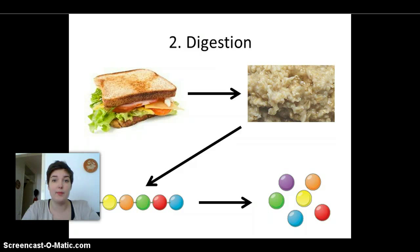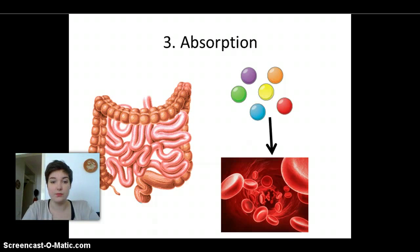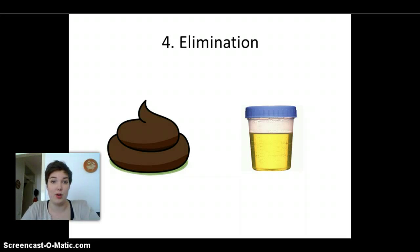That's the next step: absorption. Absorption basically means absorbing all the nutrients into our blood, and it's done in the intestines. And the last one is elimination, which means getting rid of all the waste products that we don't need.